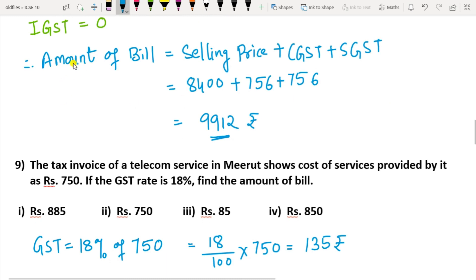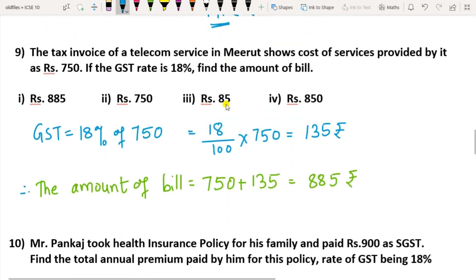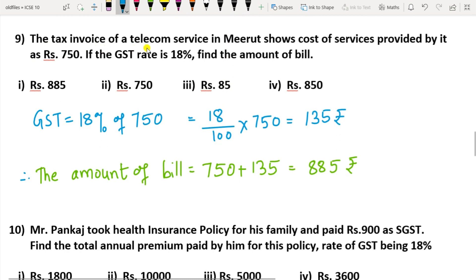If asked to find the total bill amount, you add selling price, CGST, and SGST — that gives the total bill amount. Question 9: The tax invoice of a telecom service shows cost of services at ₹750. If GST rate is 18%, find the amount of the bill. 18% of 750 = ₹135. Therefore, the bill amount = 750 + 135 = ₹885. Option 1 is the correct option.